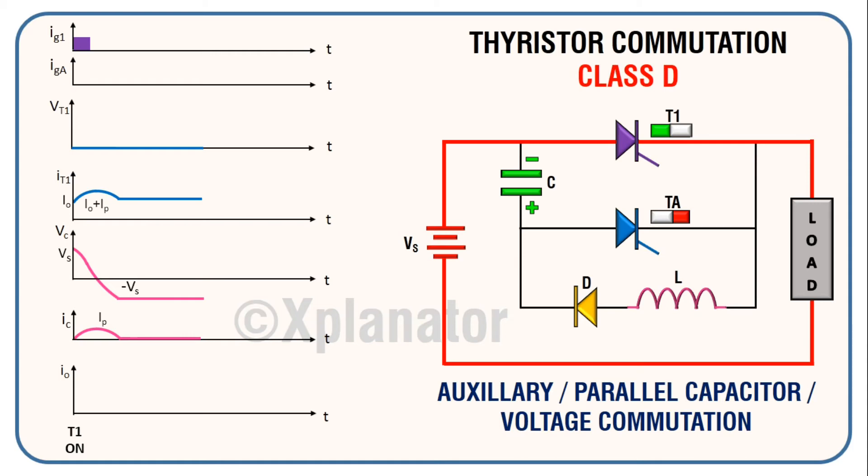The load current in the circuit remains unaffected during the whole process and so it is a constant line with magnitude I0.